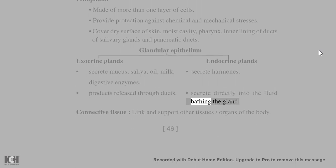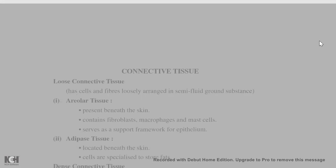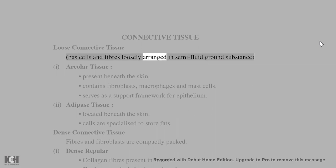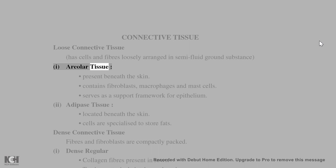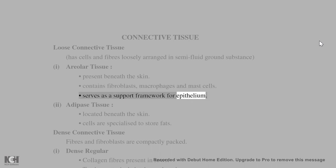Connective tissue links and supports other tissues and organs of the body. Loose connective tissue has cells and fibers loosely arranged in a semi-fluid ground substance. Areolar tissue is present beneath the skin and contains fibroblasts, macrophages, and mast cells; it serves as a support framework for epithelium. Adipose tissue is located beneath the skin; its cells are specialized to store fats.